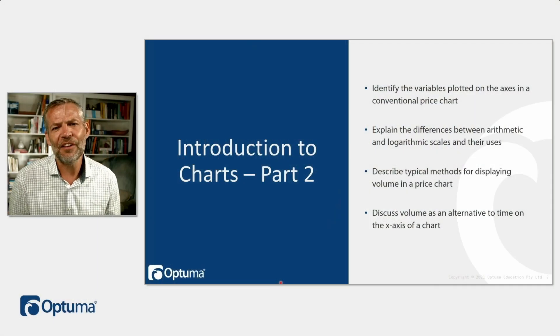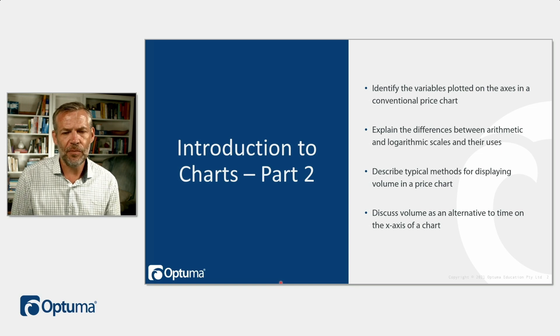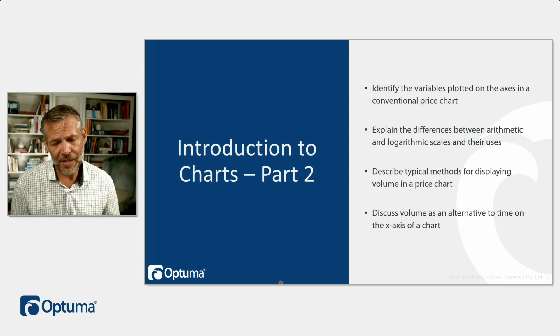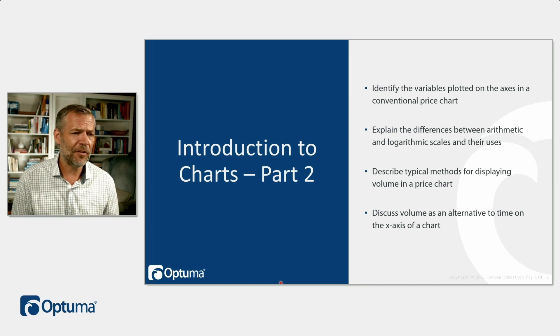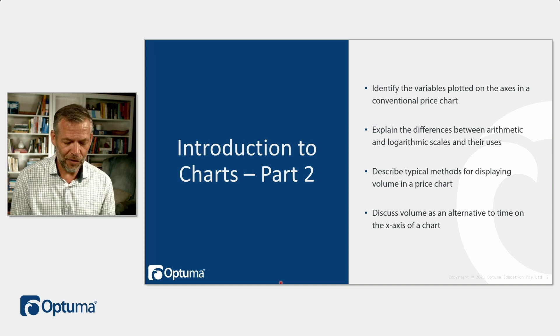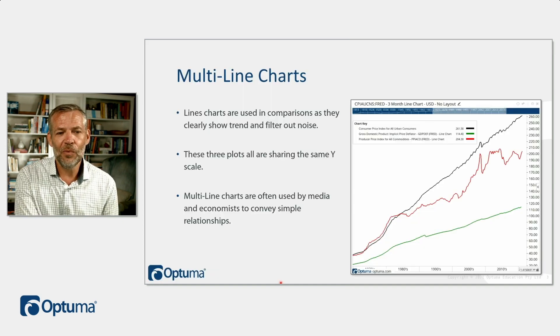Welcome back. We're going to continue our discussion of charts with part two of this section. We're going to look at the variables on the charts — more specifically the axes — and how those axes can be used, along with a couple of warnings. We'll explain the differences between arithmetic and logarithmic scales, which is really important particularly for long-term analysis, how we display volume typically, and then a non-typical way of using volume as well.